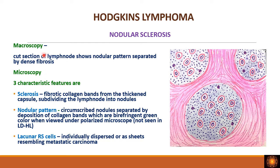Morphologically in nodular sclerosis, the cut section of the lymph node shows a nodular pattern due to extensive fibrosis. Three important microscopic features are: sclerosis, nodular pattern, and lacunar type RS cells. Thickened fibrous bands with abundant collagen extend from the capsule into the lymph node, dividing it into nodules. The collagen in these bands shows birefringent green color under polarized microscopy. The RS cell type seen is the lacunar variant.